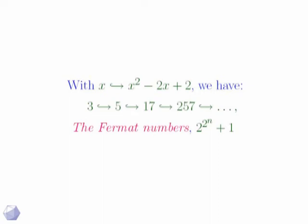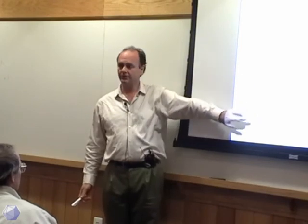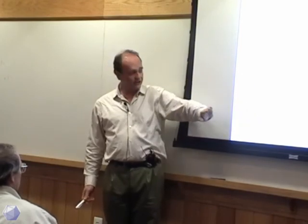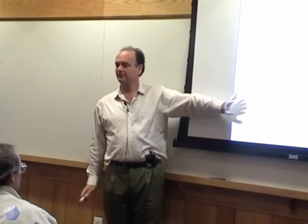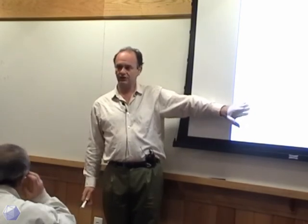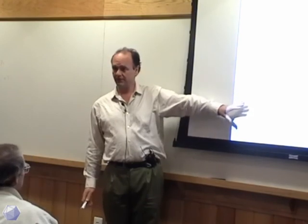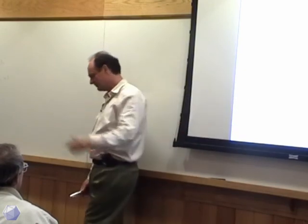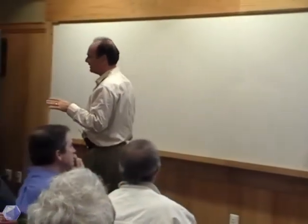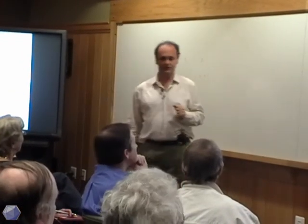But I can do the same thing with other dynamical systems. What happens if we use x goes to x squared minus two x plus two? Starting with three, we get the sequence 3, 5, 17, 257... and these are the so-called Fermat numbers, two to the two to the N plus one. Both of these sequences have been used before to prove infinitely many primes. In fact, any dynamical system with certain periodicity properties can be used to prove infinitely many primes — so there are infinitely many such proofs. I won't go into all the details, but it's quite an interesting research area.